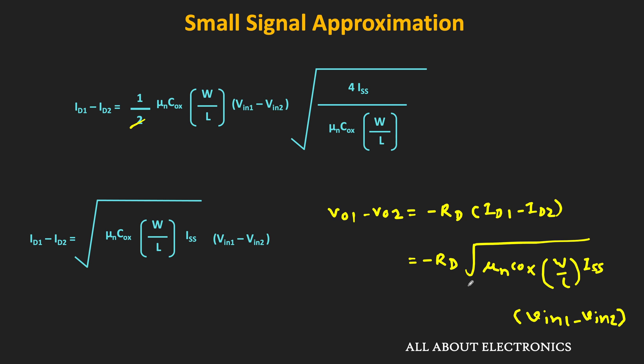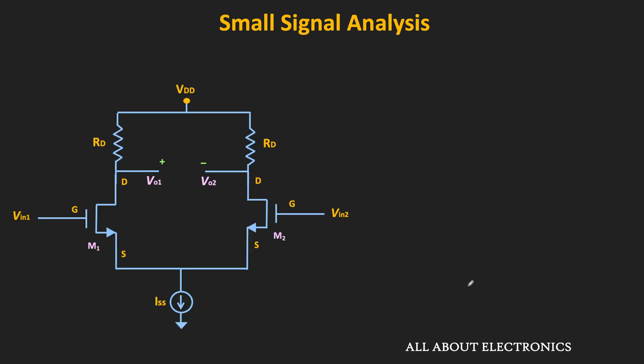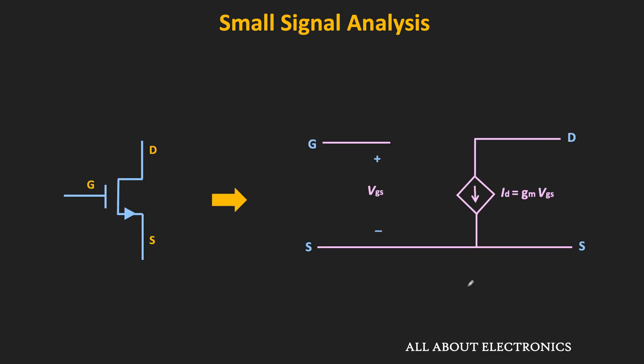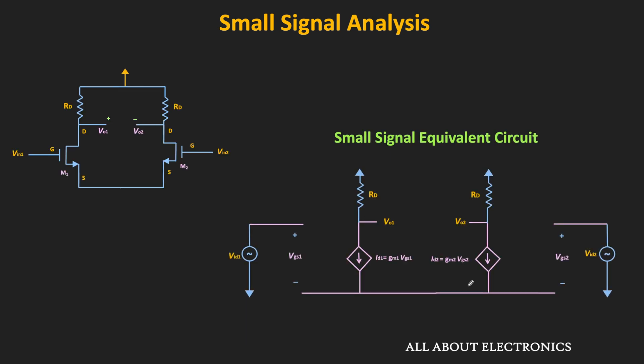The input to this differential amplifier consists of two components: the common mode component and the differential component. For the small signal analysis, all DC sources and the common mode input will be considered as zero — the common mode input vcm will act as zero, the ideal current source will act as an open circuit, and the voltage source Vdd will act as a short circuit connected to the ground terminal. For the small signal analysis we need to replace these MOSFETs with their small signal model.